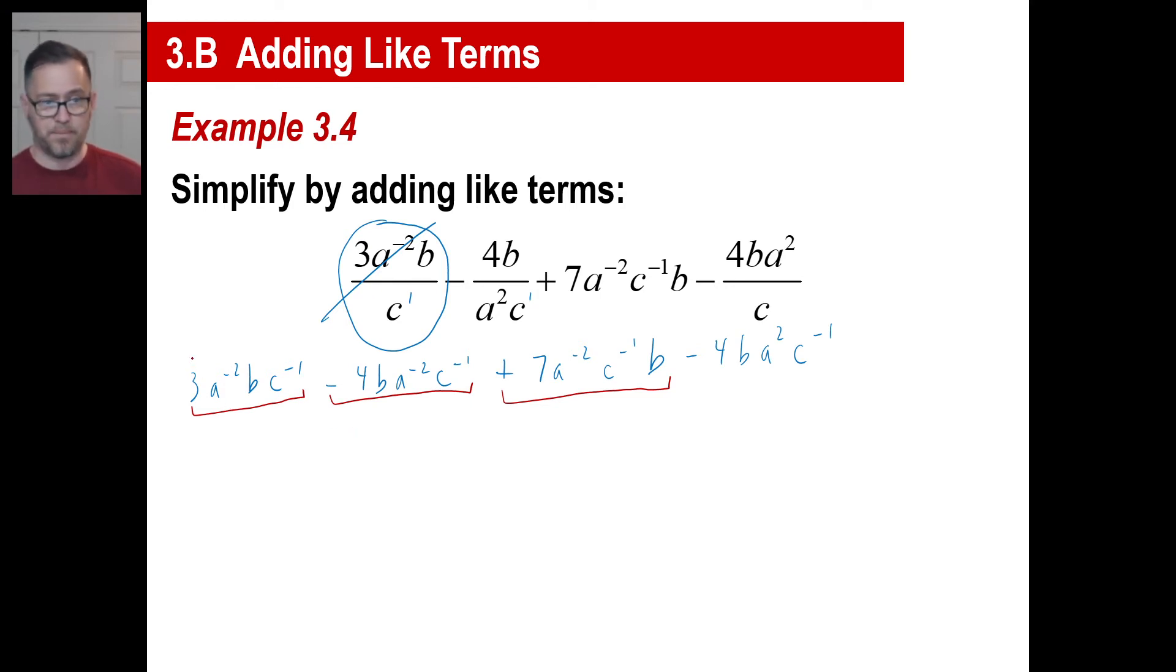I got 3 of something, I got negative 4 of something, that gives me negative 1 of something, and negative 1 of something plus 7 of something gives me 6 of something. So I'll say it's 6, a^(-2), b to the first, c^(-1), and then I just plop this on the very end. That's going to be 4b, a², and then c^(-1). These are addition problems, and that little trick of moving the stuff up to make them all numerators.